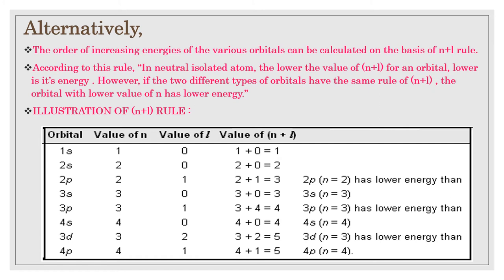Similarly, for 3p and 4s, both have n plus l equal to 4, so 3p has lower energy than 4s because of its lower principal quantum number of 3. The same logic applies to 3d and 4p. From this analysis, the energies of various orbitals increase in the order: 1s, 2s, 2p, 3s, 3p, 4s, 3d, 4p, and so on.